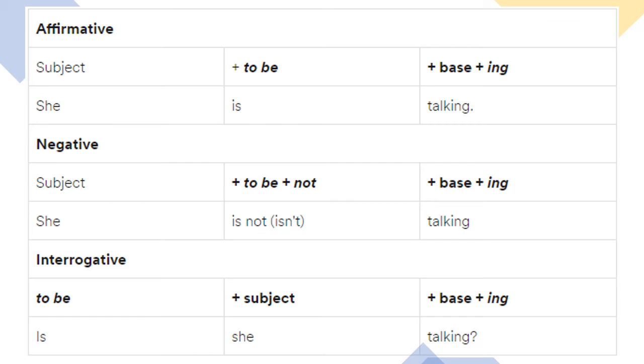Now, in negative form, the subject is she. And the verb to be is, is, plus not, so it will be is not. And base plus ing, talking.